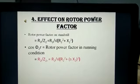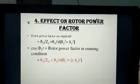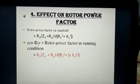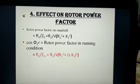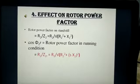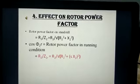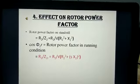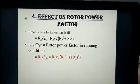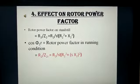Effect of slip on rotor power factor. We know that the power factor is given by R / Z. The rotor power factor during the standstill condition is given by cos φ2 = R2 / Z2, which on substitution becomes R2 / √(R2² + X2²). Similarly, the rotor power factor during the running condition is given by cos φ2R = R2 / Z2R, which on substitution becomes R2 / √(R2² + (SX2)²).